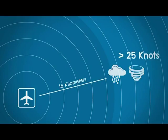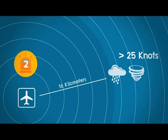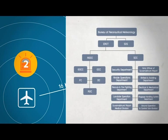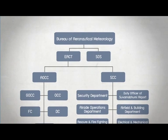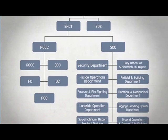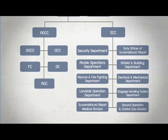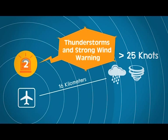When thunderstorms and/or strong wind with speed more than 25 knots are detected within 16 kilometers and their directions are towards or over Suanapum Airport, it now enters the warning level 2. There is a notification flowchart of thunderstorms and strong wind warning as following. We will start notifying everyone by using the phrase 'thunderstorms and strong wind warning.'